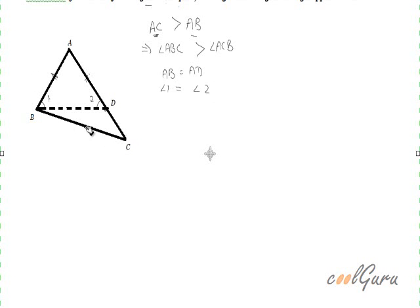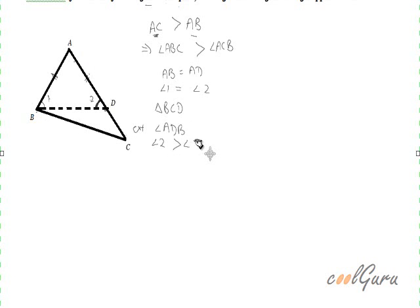Now, consider triangle BCD. This angle 2, which is angle ADB, is the exterior angle for triangle BDC. So, this angle 2 will be greater than angle DCB. Why? Because we know that the exterior angle is equal to the sum of two interior opposite angles.